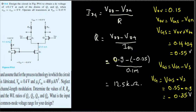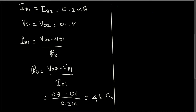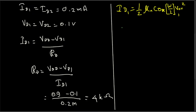Now we need W/L ratios for Q1, Q2, Q3, and Q4. Q1 and Q2 form a current mirror, meaning they carry equal currents and are matched — their W/L ratios are identical. We find the W/L ratio using the drain current equation: ID equals (1/2) μnCox (W/L) VOV².